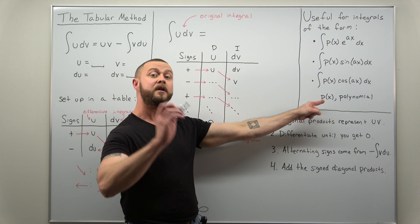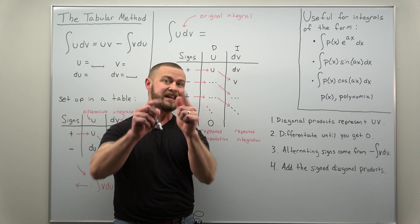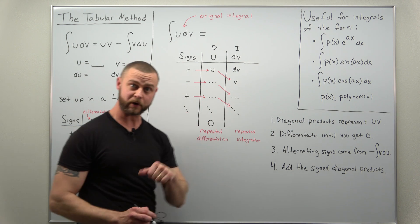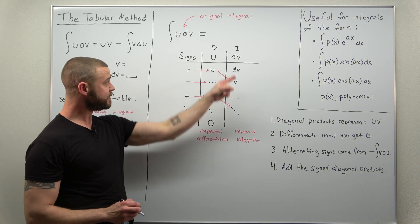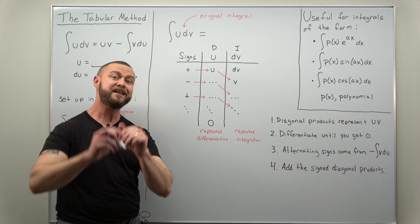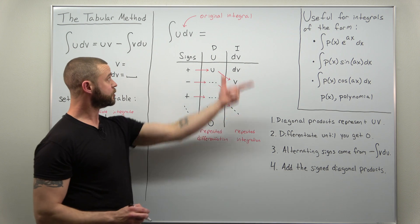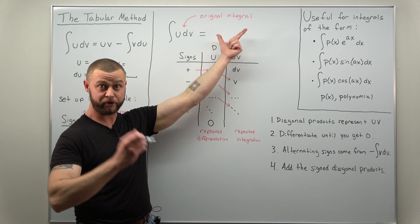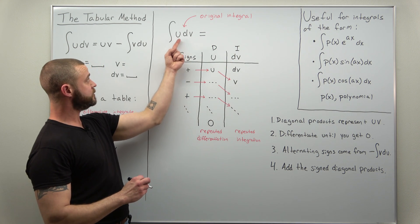The simple problems, you just keep differentiating until eventually you get zero. That's going to happen if you repeatedly differentiate any polynomial. Eventually you'll get zero, and the other column you just repeatedly integrate.